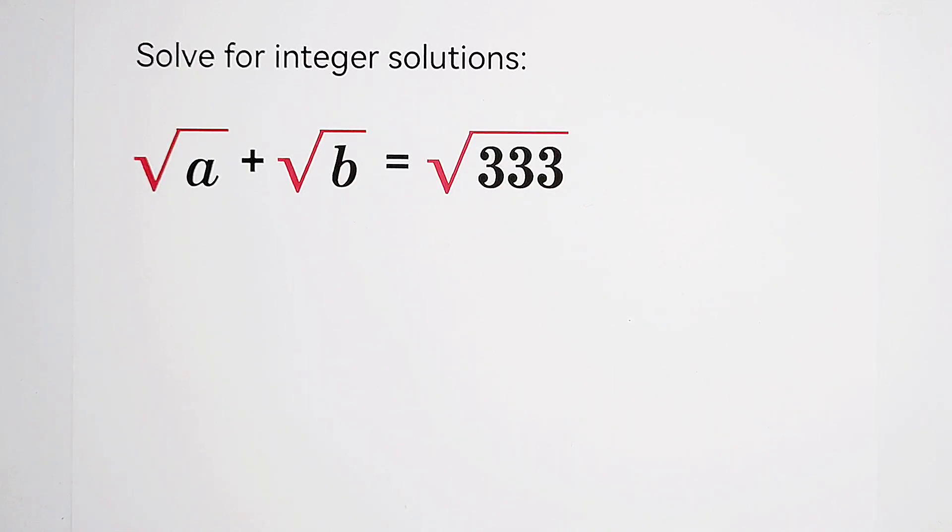Solve for integer solutions a and b, such that square root of a plus square root of b equals square root of 333.